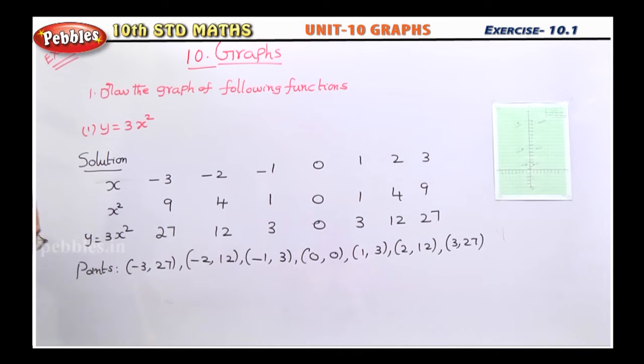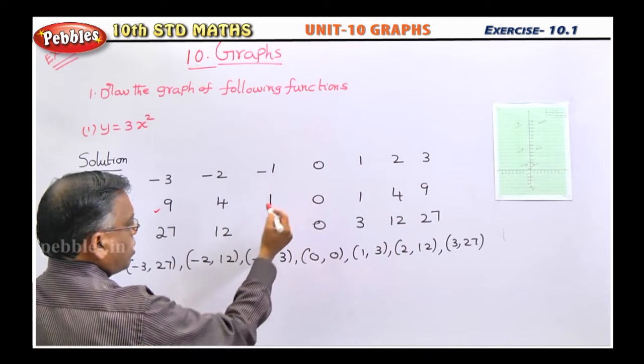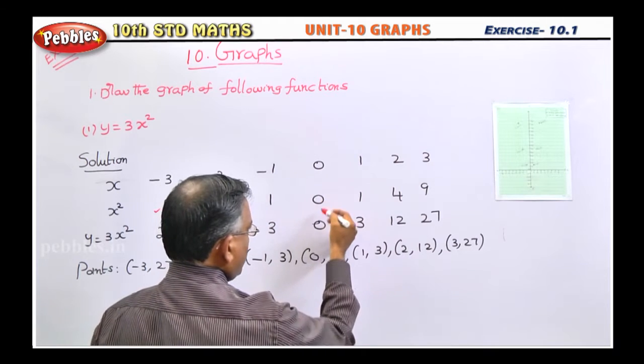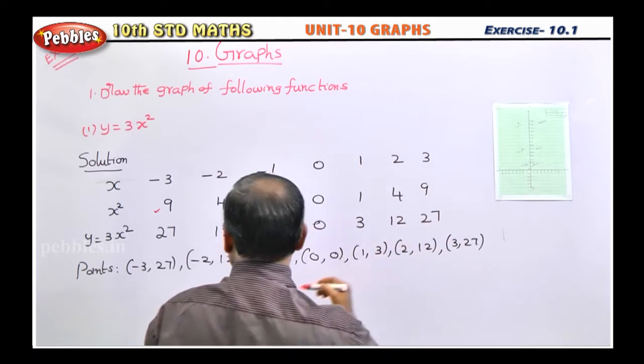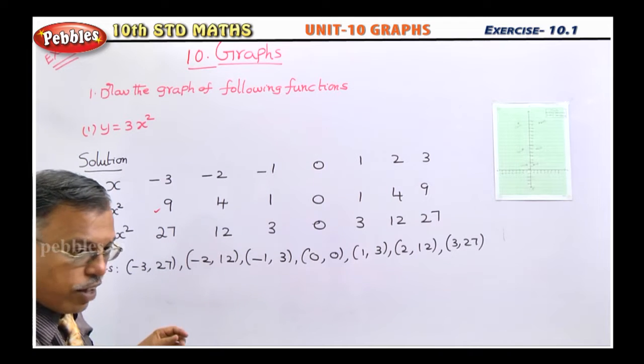You need to multiply this with 3. 9 into 3 is 27, 4 into 3 is 12, 1 into 3 is 3, 0 into 3 is 0, 1 into 3 is 3, 4 into 3 is 12, 9 into 3 is 27. Now you got y values also.